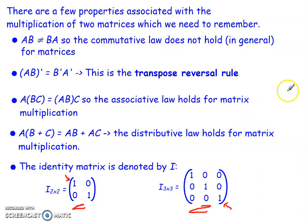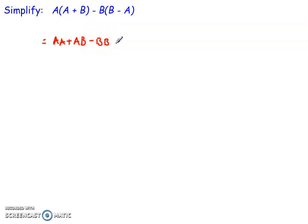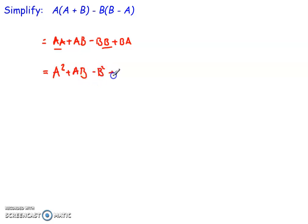There are a couple of important results using these laws together. Consider simplifying A(A+B) minus B(B−A). Expanding the brackets gives A² plus AB minus B² plus BA. Note the order must be kept correct throughout. The A×A and B×B terms become A² and B², giving A² plus AB minus B² plus BA.